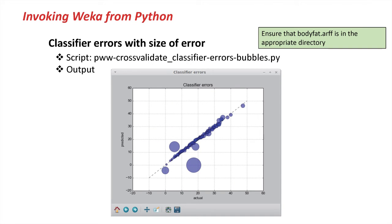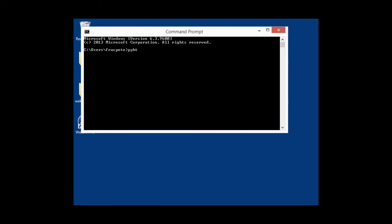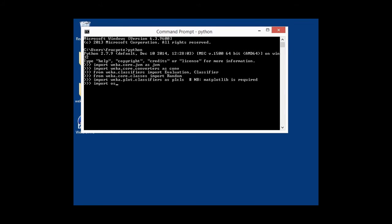For the next script, we'll be plotting the classifier errors obtained from a linear regression classifier on a numeric dataset. And once again, we'll be using the errors between predicted and actual as the size of the bubbles that we're going to plot. Once again, I'm going to fire up the interactive Python interpreter. I'm going to import, as usual, a bunch of modules. In this case, new is the plotting module for classifiers. I'm going to import here. And we'll start up our JVM.